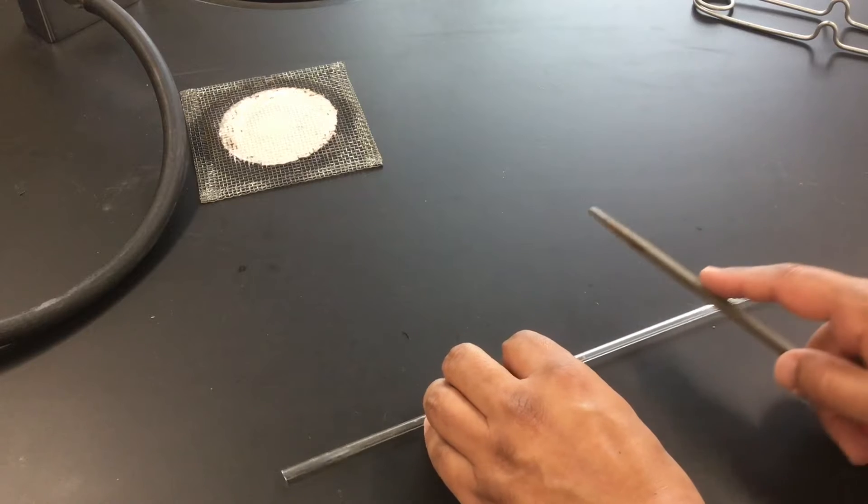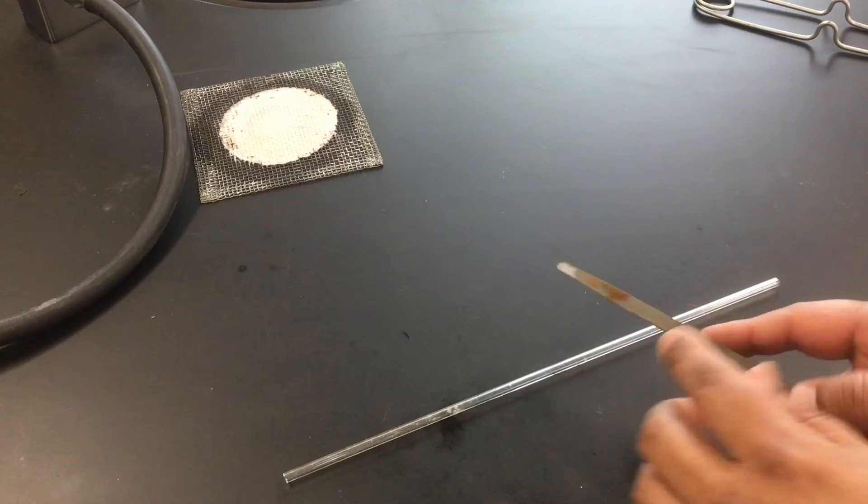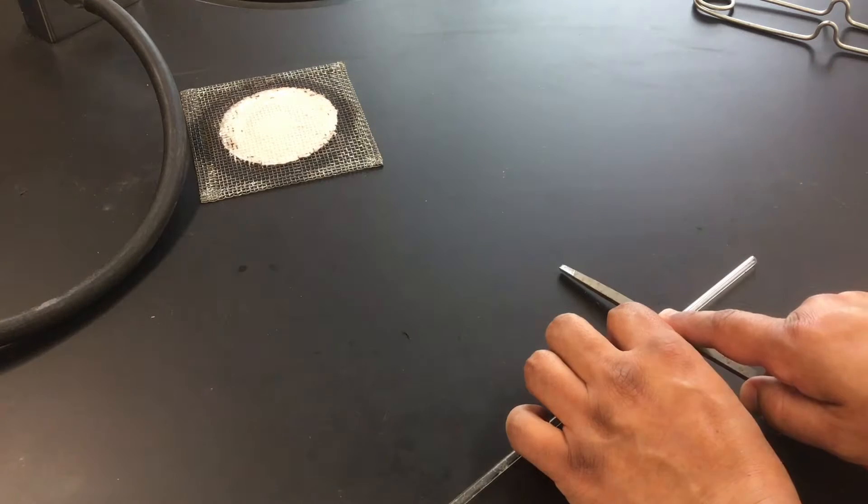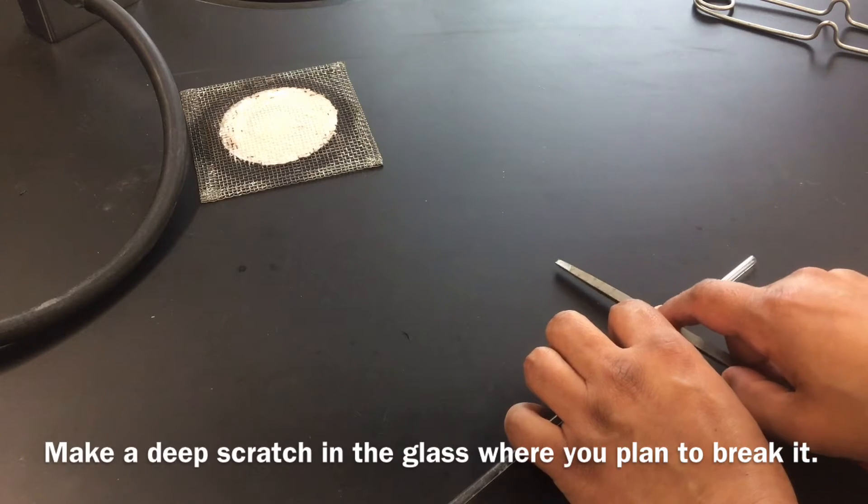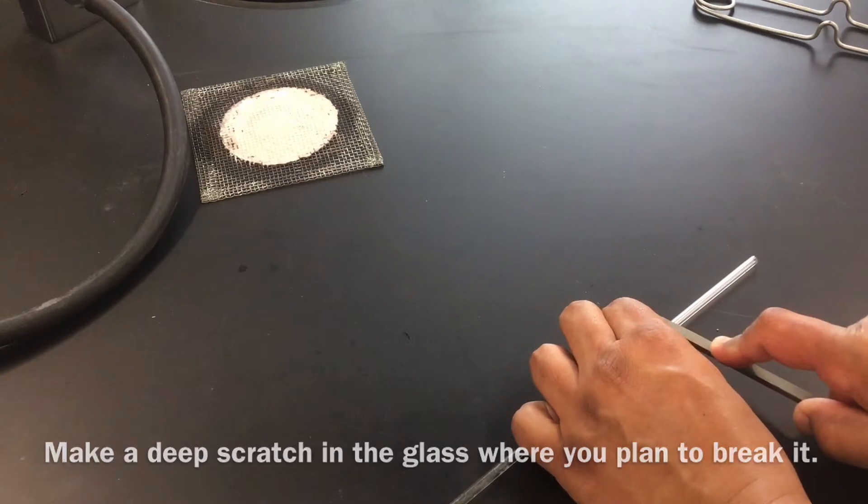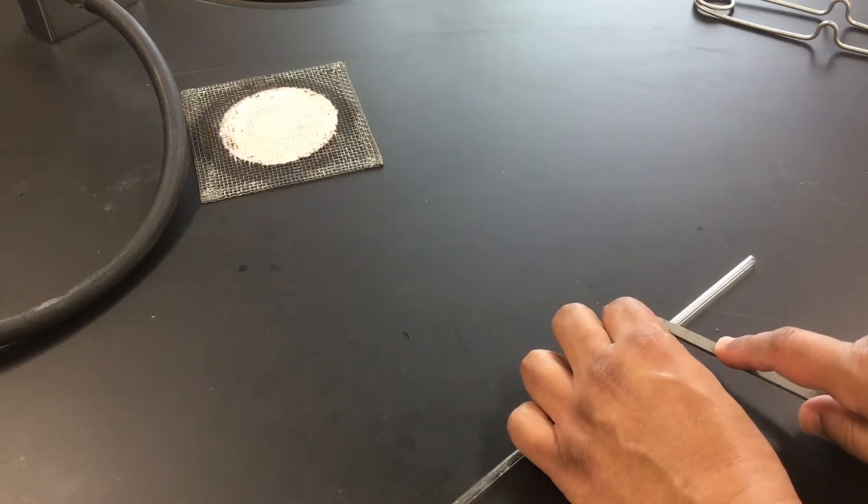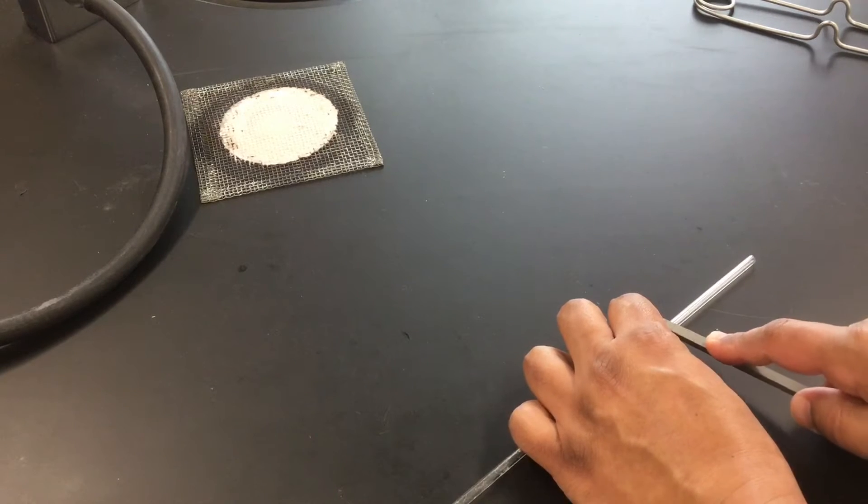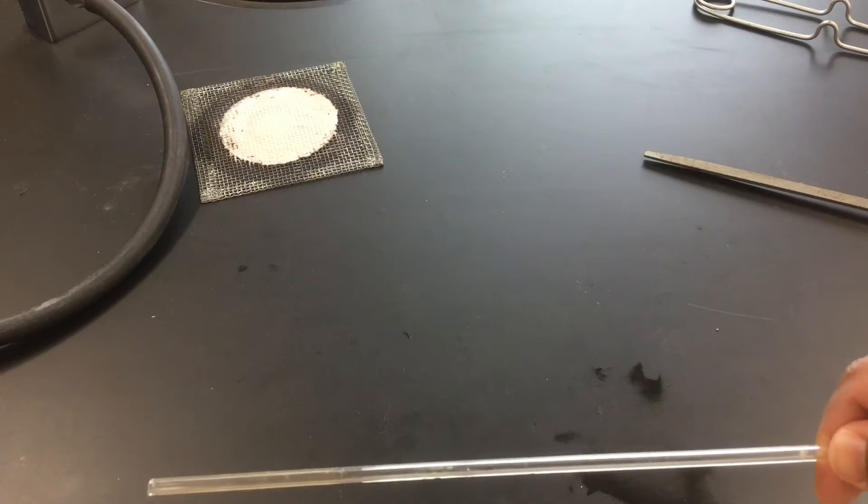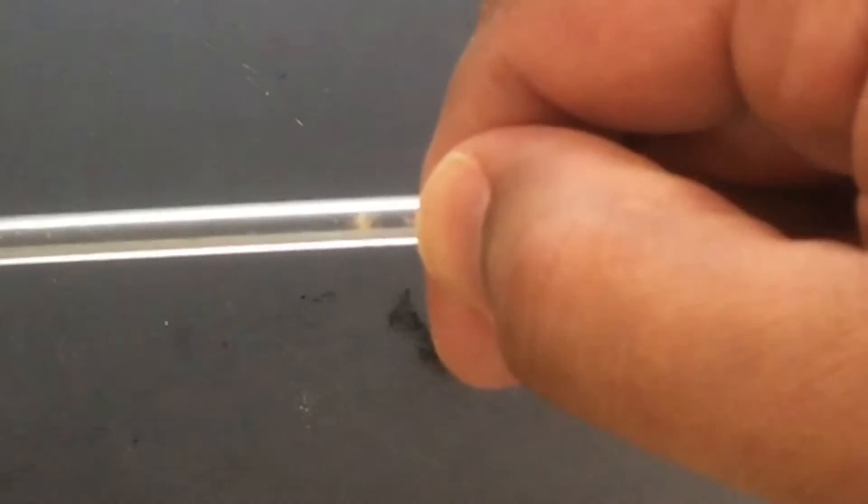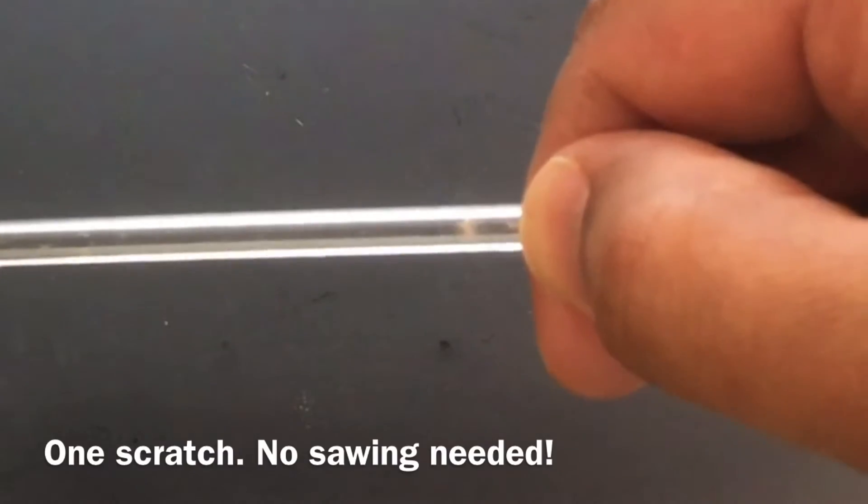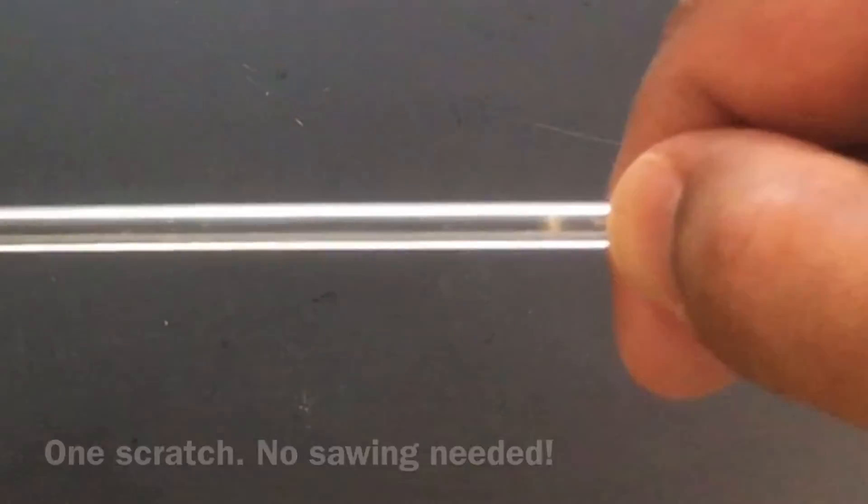We're going to take the glass piece and using our steel file we're going to make a nice deep scratch in the spot where we want to cut the glass. If you want to make another scratch in that very same place that's okay, just to make sure it's a nice deep indention. And if you look closely at that you'll see that we just have one scratch. I haven't been sawing on this, just made a nice deep scratch.